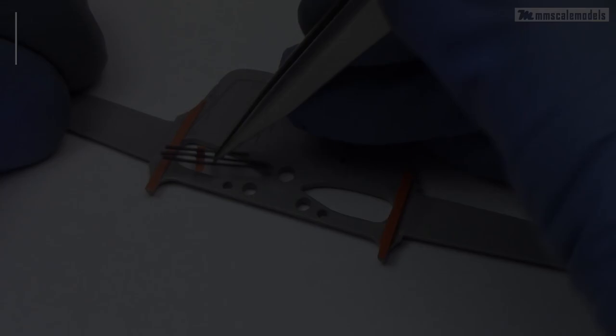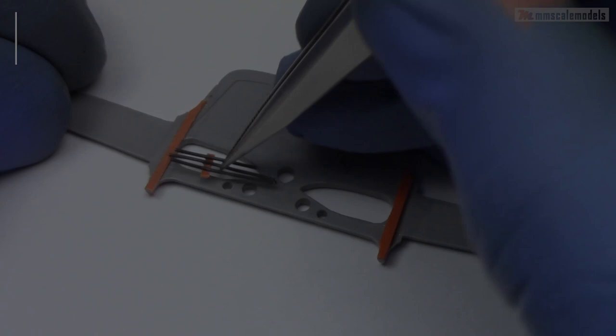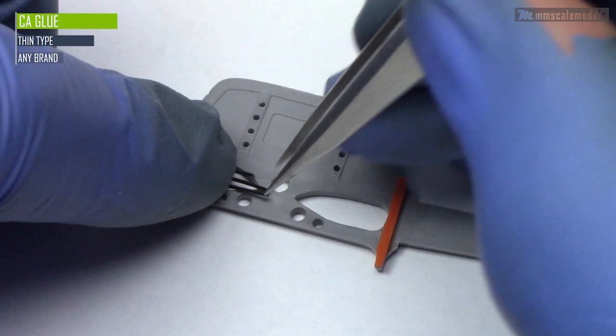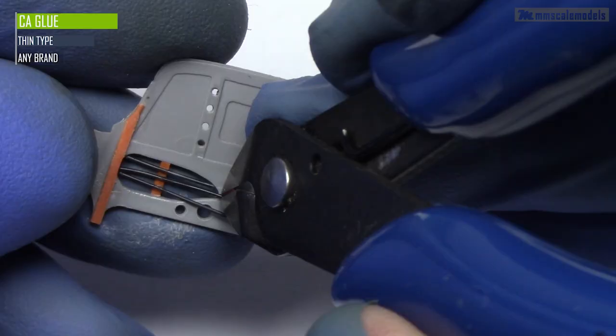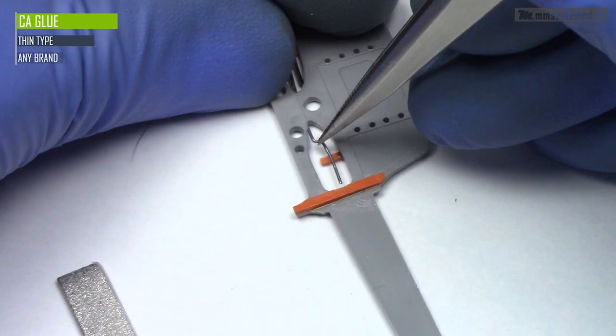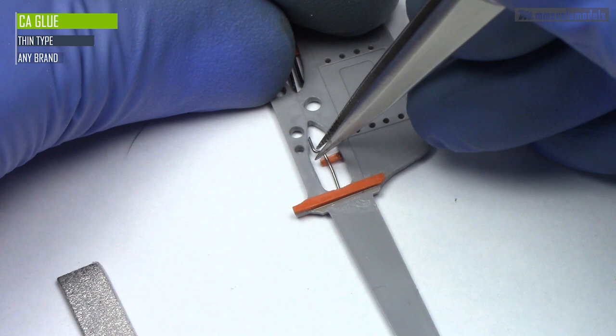Inside the openings we just did we can see some plumbing going inside the bulkhead. So on one side I used stretch sprue to recreate that. And on the other I used soldering wire due to the bends in the pipes visible on the reference images.